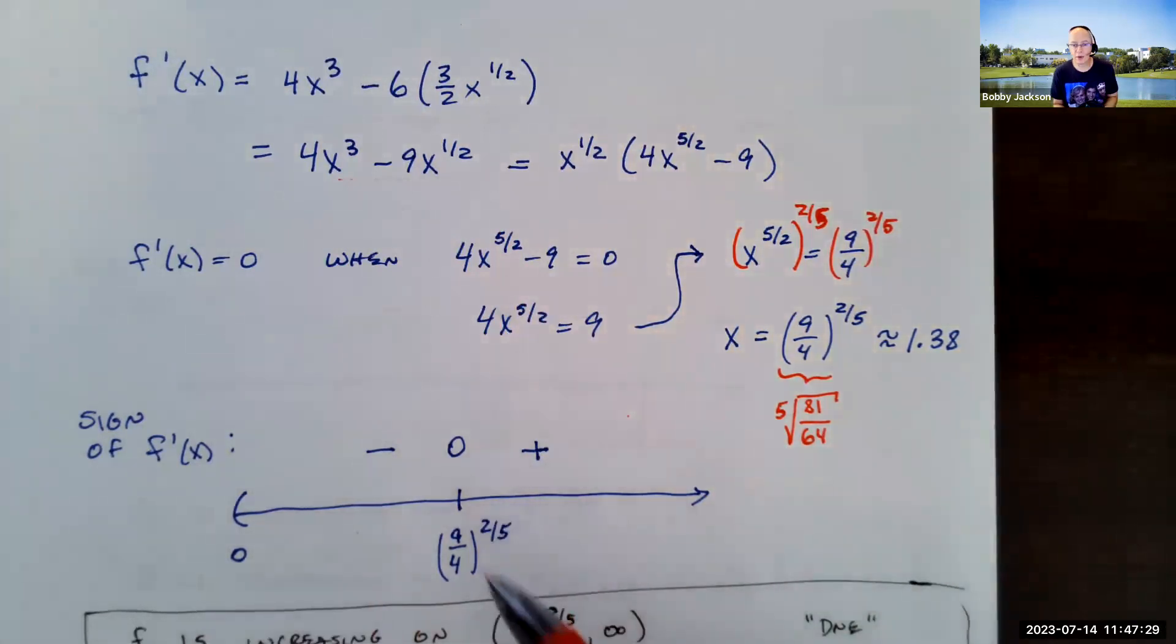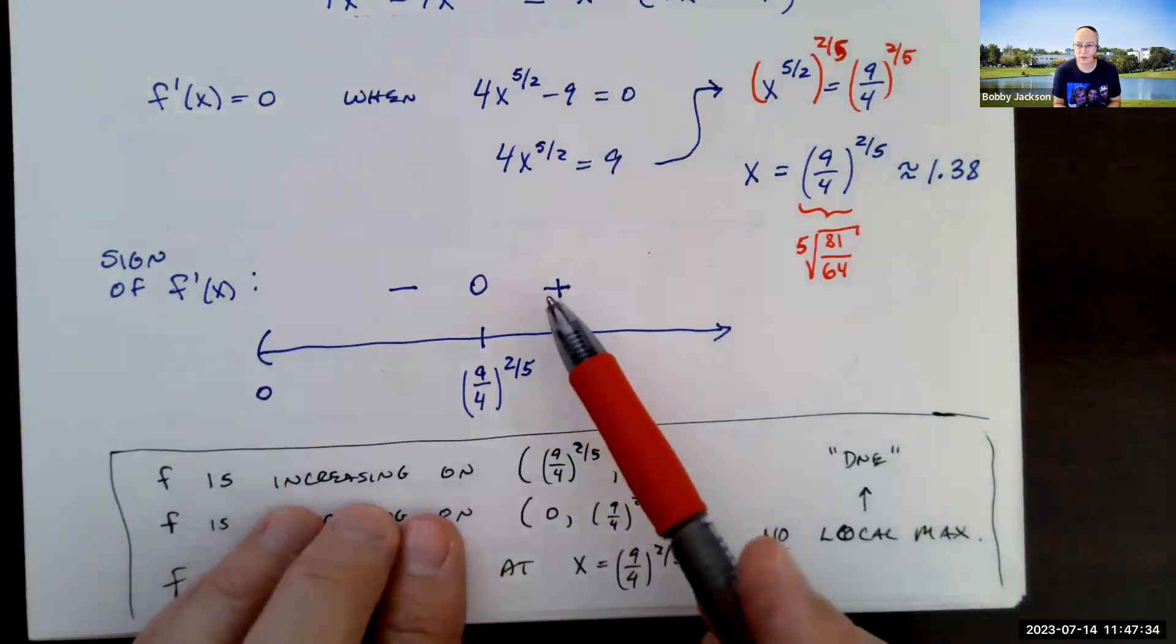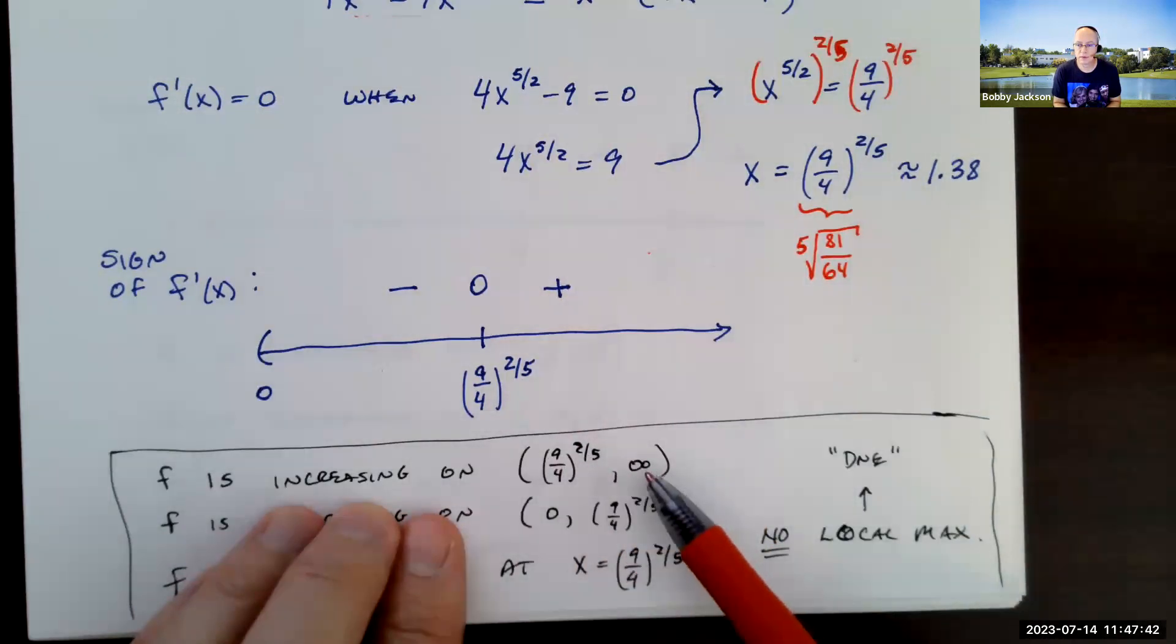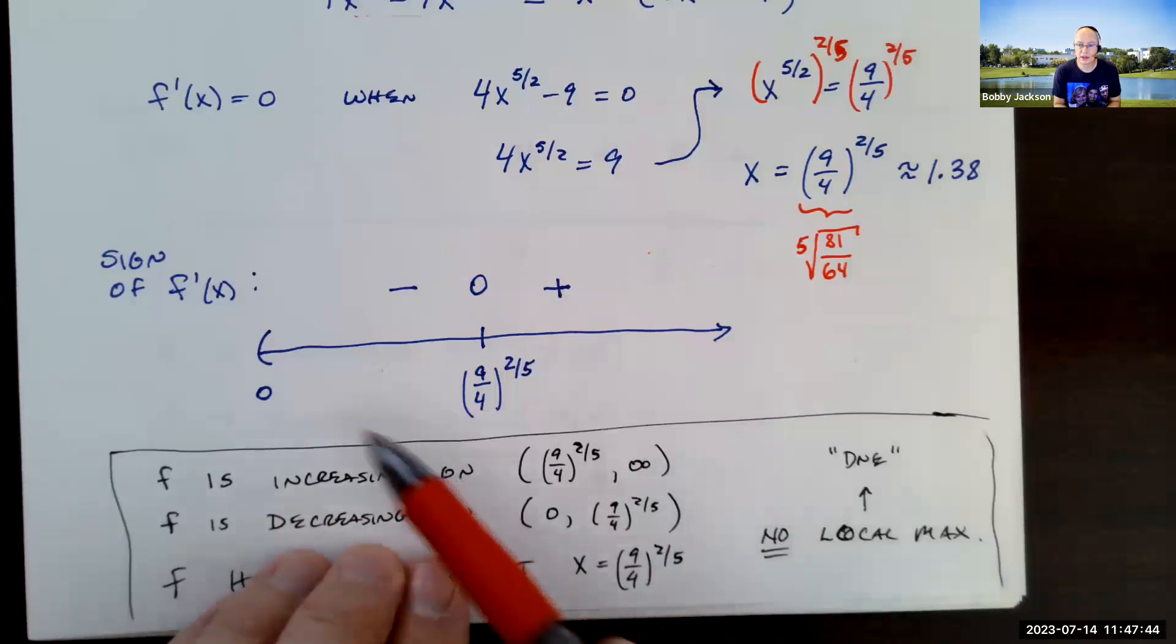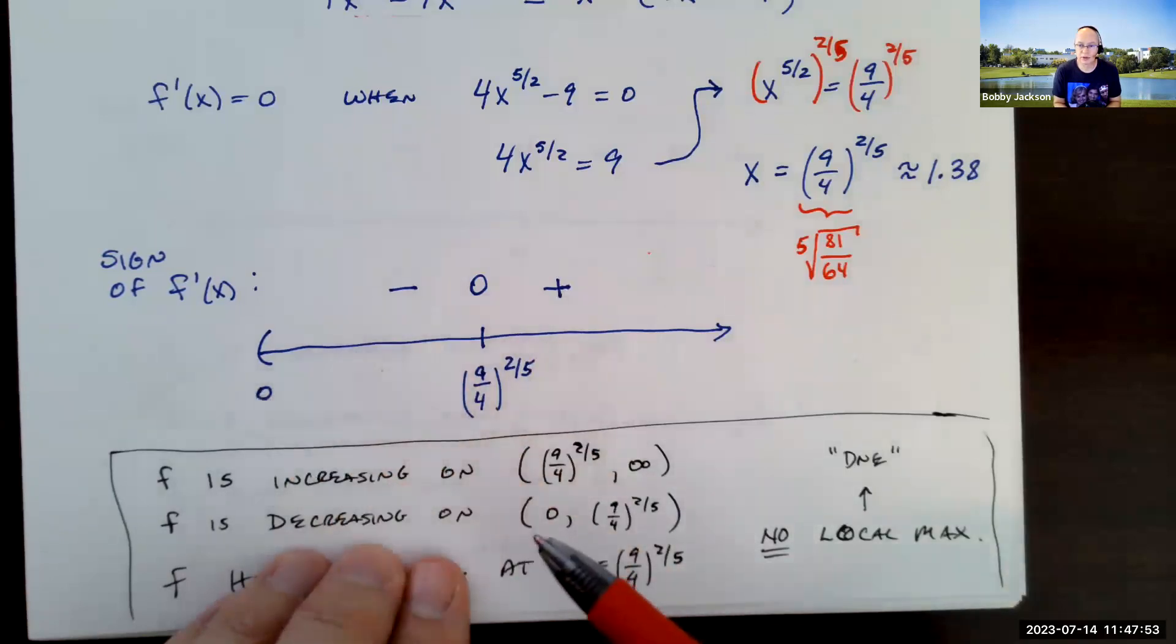So obviously, now we can answer the questions. The function is increasing when the derivative is positive. So that's going to be on the interval from this number, which is about 1.38, but they want the exact value, to infinity. It's decreasing, be careful, not from minus infinity, but from zero to that value. Because remember, we only are looking at positive values of x in the domain for this function.